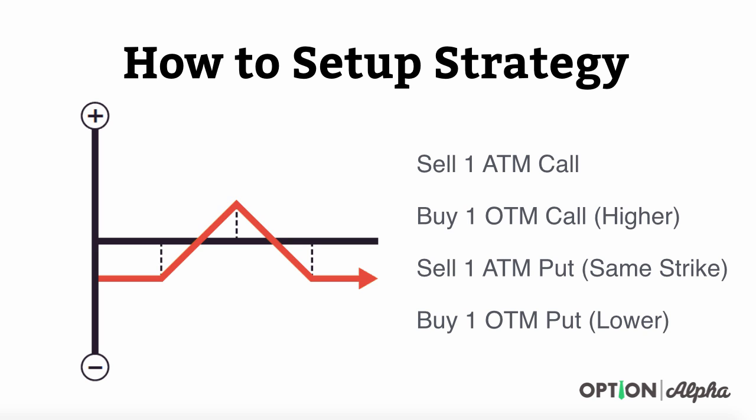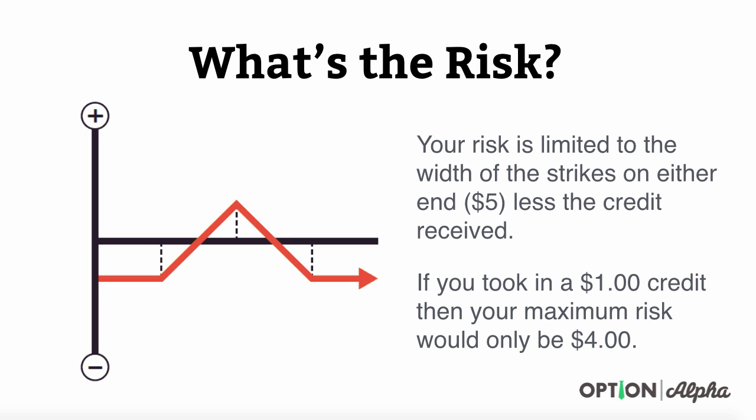The wider you make the difference between the at-the-money strikes and the out-of-the-money strikes, the more it will increase your credit on the trade, but it will also increase your risk in the position a little bit. Your risk is limited to the width of the strikes that you entered on either side. We usually do these about $5 or $10 wide, less the credit that you received. If you have a $5 wide strike and you took in a $1 credit, your maximum risk would be $4.